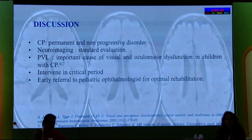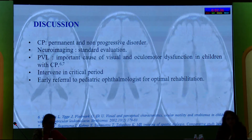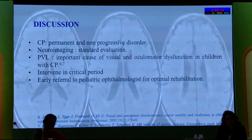In summary, CP is a permanent and non-progressive disorder, and neuroimaging is considered the standard in the evaluation of cerebral palsy. PVL is an important cause of visual and oculomotor dysfunction in children with cerebral palsy. The visual system is a sensory modality amenable to modulation only during a critical period of time. If this period is lost, the child would not be able to obtain appropriate visual rehabilitation, which is important for development of locomotor and other motor responses. Therefore, these children should be referred early to a pediatric ophthalmologist for optimal rehabilitation, to support development of visually directed gross and fine motor functions.